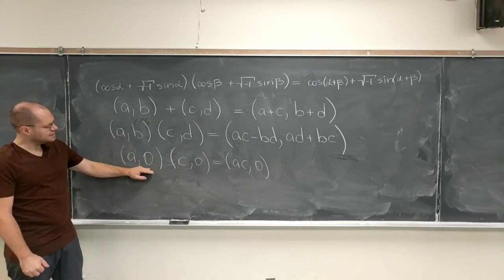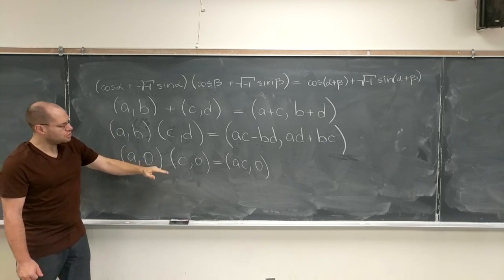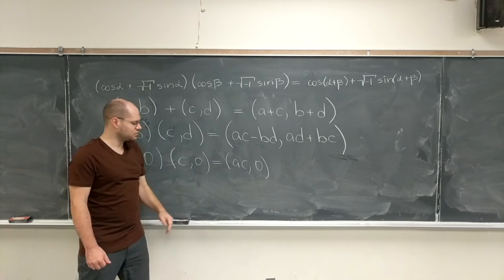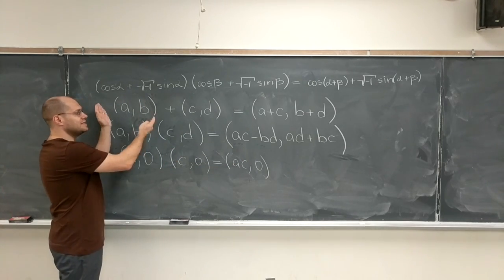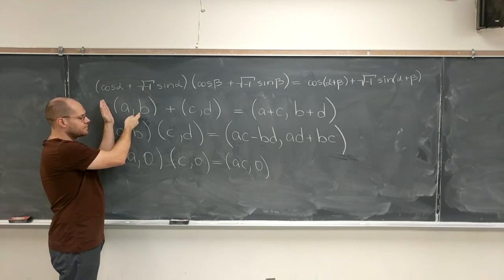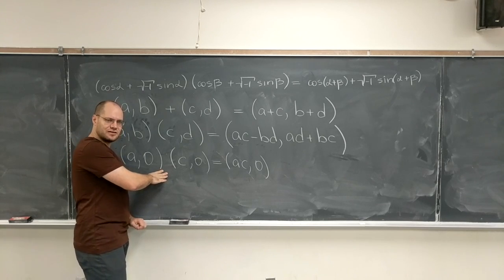And so numbers of this kind—well, they're clearly closed under addition. They're also closed under multiplication, as this shows, because you get another number following this rule. And so this subset of these numbers looks like real numbers in a way. And so real numbers are kind of mixed in here, but in this rather awkward way.